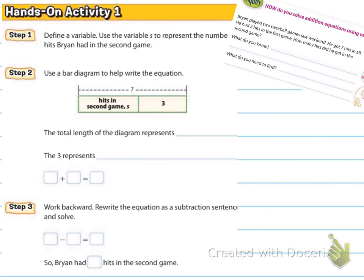So now the book is going to give us step-by-step directions on how to solve for how many hits he got in the second game. So step one says to define a variable, use the variable s to represent the number of hits Brian had in the second game. Then it wants us to use a bar diagram to help write the equation. So they've set up the bar diagram where they show the total length of the diagram. What does that represent?